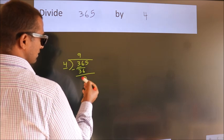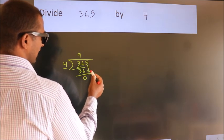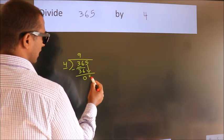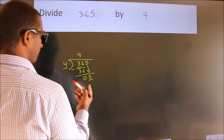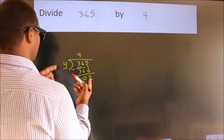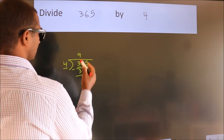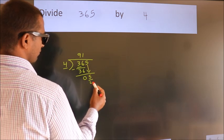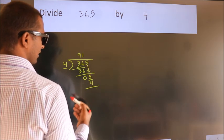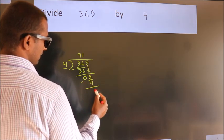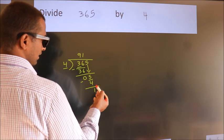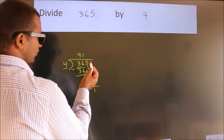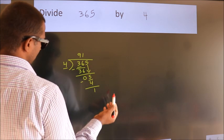After this, bring down the beside number, so 5 down. So 5, a number close to 5 in the 4 table is 4 times 1 is 4. Now we subtract, we get 1. After this, no more numbers to bring down.